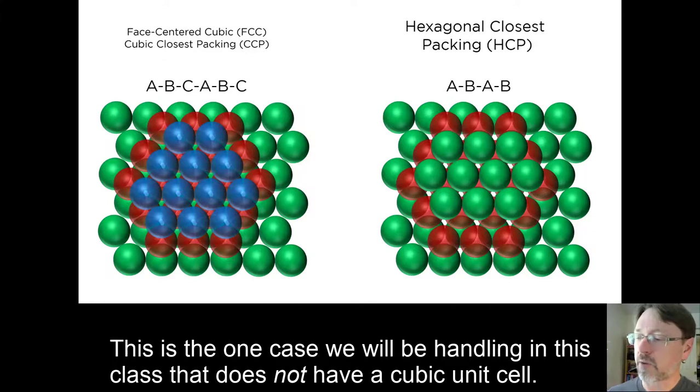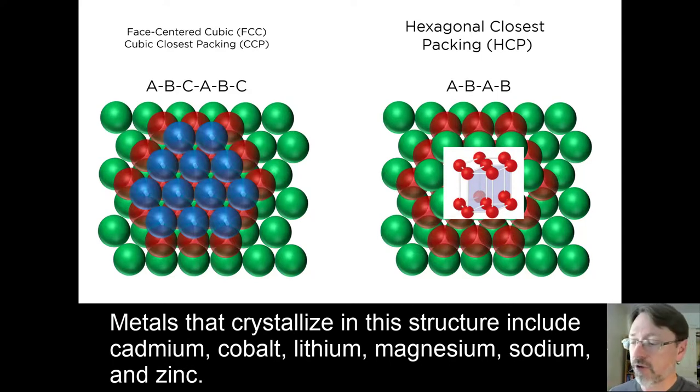This is the one case that we will be handling in this class that does not have a cubic unit cell. Metals that crystallize in this structure include cadmium, cobalt, lithium, magnesium, sodium, and zinc.